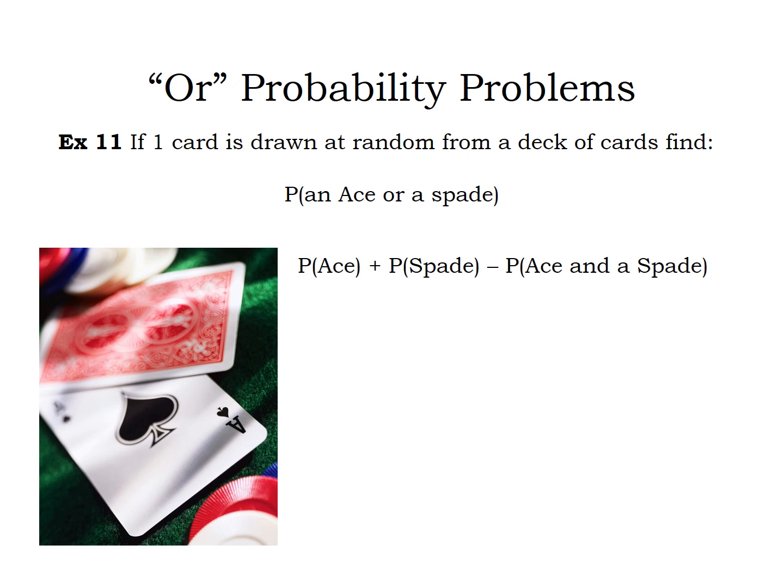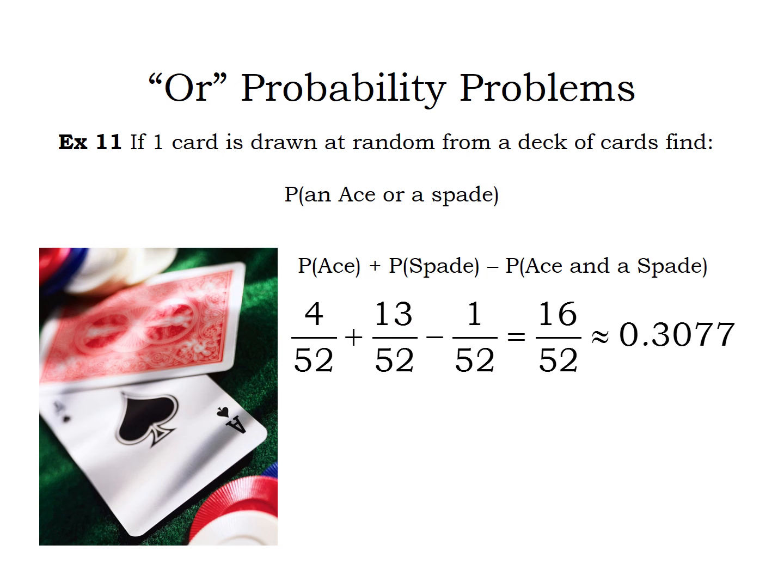Here's what it should look like: the probability of the first thing plus the probability of the second thing minus the probability of both things. There are four aces in the deck and thirteen spades. The ace of spades is the only card that is both an ace and a spade, so it got counted first as an ace and then as a spade — counted twice — which is why you subtract one out of fifty-two.